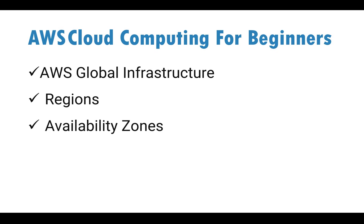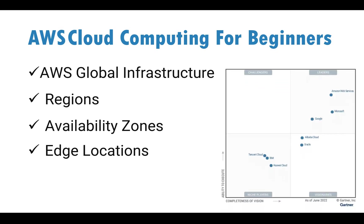What we are going to cover in this AWS cloud infrastructure video: we'll talk about what regions are, what availability zones mean in cloud, and also edge locations. These are the three main components of the AWS cloud infrastructure. I'll also talk about the Gartner Magic Quadrant of cloud infrastructure and platform services — a survey showing who are the leaders, challengers, niche players, and more.